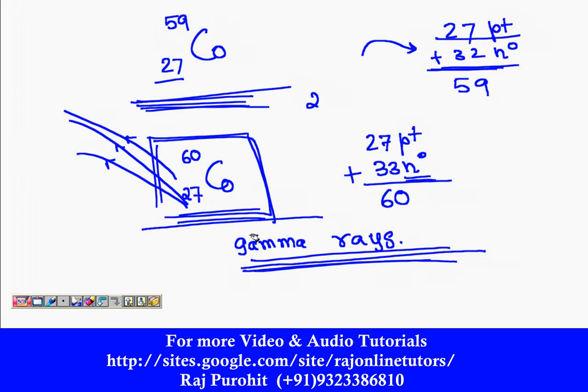But natural cobalt which is there is not able to emit out these radiations. These are known as radioisotopes. So this was one of the uses of radioisotopes. Similarly we have two more other uses of radioisotopes.